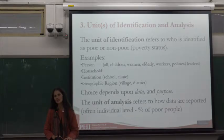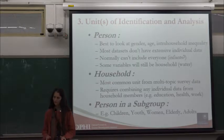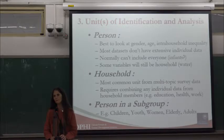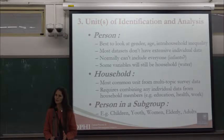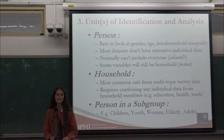The unit of identification should be chosen depending on your purpose, and there are justifications for using both. We ourselves have done measures using various units of identification. If you choose the person and identify every person as poor or non-poor, there are certain benefits. For example, you can decompose your measure by gender and have meaningful results. With the global MPI we can decompose by gender, but the results are not meaningful because the household is the unit of identification.